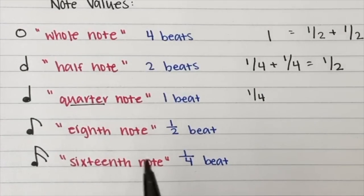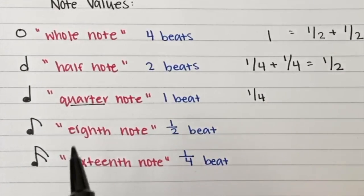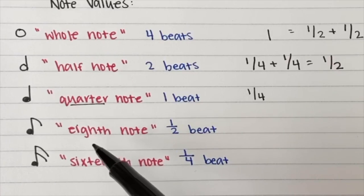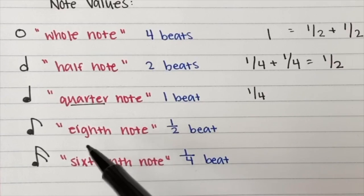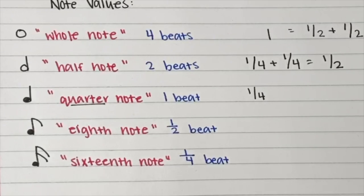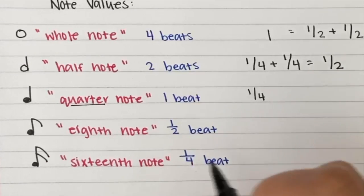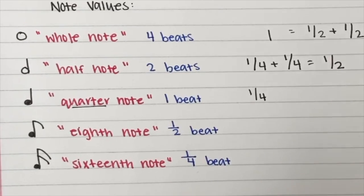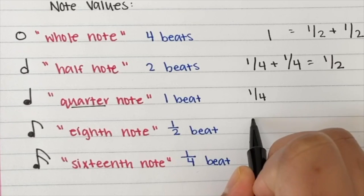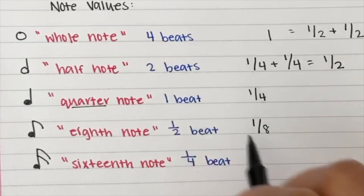Next we have an eighth note. The name comes from the fact that if a whole note is four beats, then it takes eight eighth notes to make up four beats or a whole note. So an eighth note is half of a quarter note. This is one eighth of a whole note.